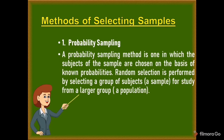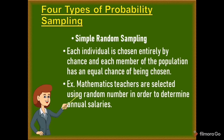Let's proceed to the methods of selecting samples. Number one is probability sampling. A probability sampling method is one in which subjects are chosen on the basis of known probabilities, and random selection is performed by selecting a sample from a larger population. We have four types. The first is simple random sampling, where each individual is chosen entirely by chance and each member of the population has an equal chance of being chosen. An example is mathematics teachers selected using random numbers to determine annual salaries.